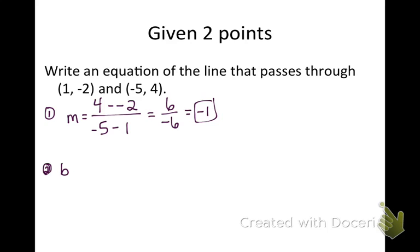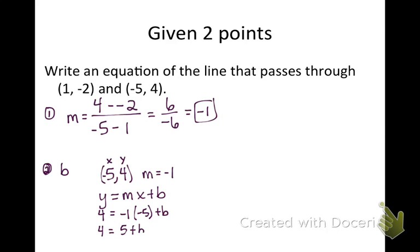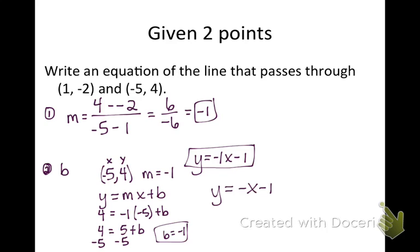So for part two, we're finding our b. And again, we get to pick our favorite point. This time I'll pick the second point. Whichever point you use will give you the same answers if you had picked the other point. So in this situation, I always write down y equals mx plus b. So I'm going to plug negative one in for m. I'm going to plug the negative five in for x and the four in for y. Now remember, solving is always the exact same way. I multiply my negative one and my negative five. And then I add or subtract over this number. Since the five was positive, I'm going to subtract it over. So now I have my m and my b. They happen to be the same thing. And I can write my final answer. So your answer can either look like this or I could have just put negative x instead of negative one x.